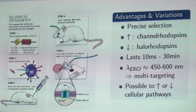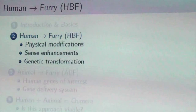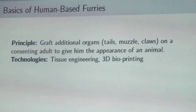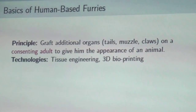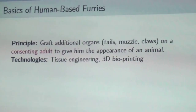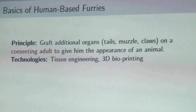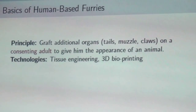Now we start with the human-based approach. The principle is to graft additional organs — like a tail or muzzle — with surgery on an existing human adult to give them the appearance we want. We can use tissue engineering and 3D printing to obtain that. These technologies already exist or are in development, but they are all separate — we have to put them together, and the final appearance is not really mastered at this time. We can only achieve a generic fox-like appearance.